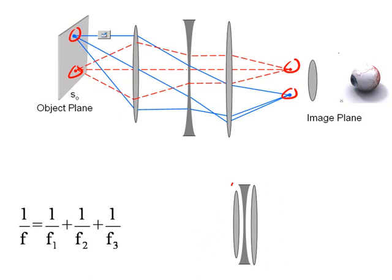And the focal length is simply the sum of the other focal lengths or one over the sum of the focal lengths, where that's F1, that's F2, and that's F3.